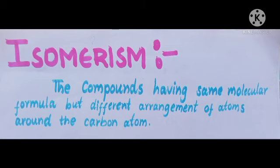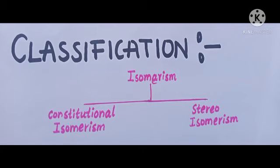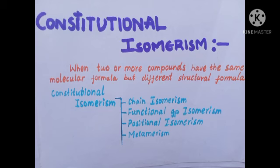Isomerism is when compounds have the same molecular formula but different arrangement of atoms. Isomerism is classified into two types: constitutional or structural isomerism, and stereoisomerism.